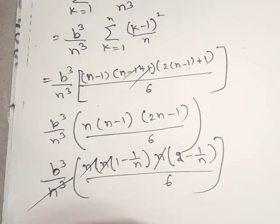Therefore, L(P, f) = b³(1 - 1/n)(2 - 1/n)/6. Hence we have proved both U(P, f) = b³(1 + 1/n)(2 + 1/n)/6 and L(P, f) = b³(1 - 1/n)(2 - 1/n)/6.